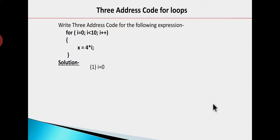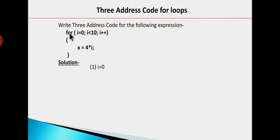Now the for loop three address code is also simple. We use the same logic. For i equals 0 — for loop means: first initialization i equals 0, then we check the condition. When condition is true, we execute the loop body and increment. After the increment, we check the condition again. When the condition is false, we go out of the loop. So for: if i is less than 10, if condition is true, we execute the body; if false, we jump out.